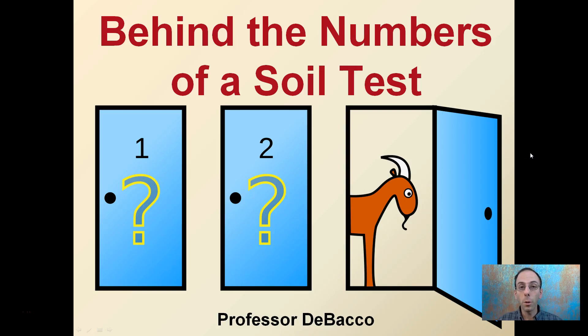I'm going to take a brief look behind the numbers of a soil test. We get these numbers back printed out in a report after we send it to our soil lab. What do those numbers mean, and how does the lab go about getting some of those?